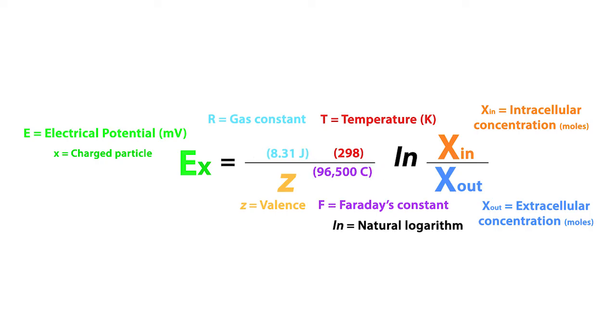Next, let's convert joules to coulombs times volts, or V. And with that, we can cancel out the coulomb units in the gas constant and Faraday's constant, leaving us with volts.